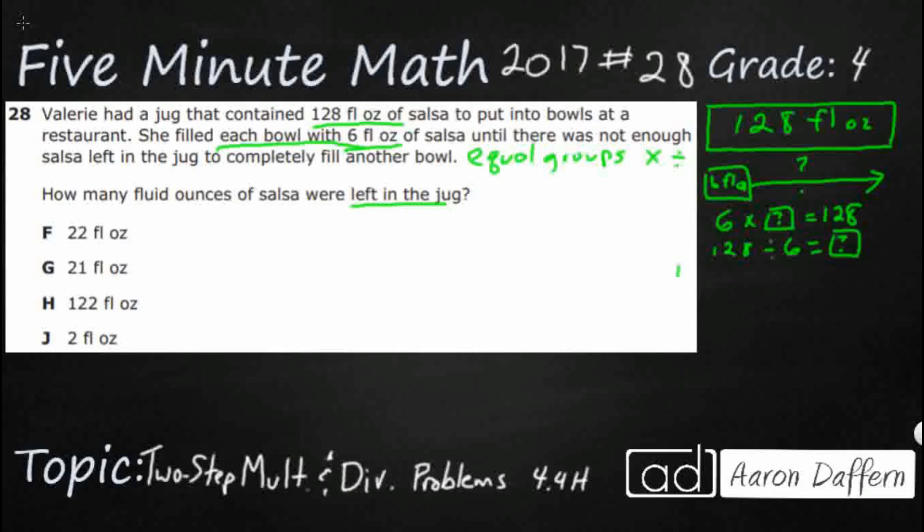Now realize that when we set it up horizontally, you've got your dividend, that's the big number, and then you get your divisor second, like this. But when you set it up like long division, it actually flips. Your divisor, your six, goes on the outside.